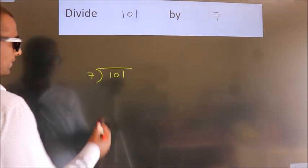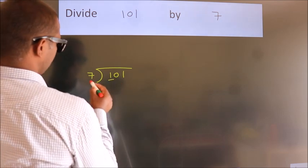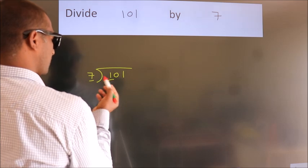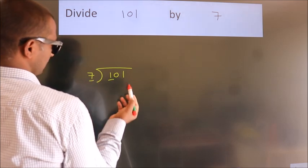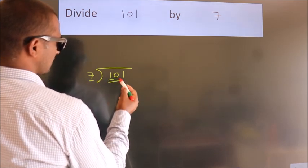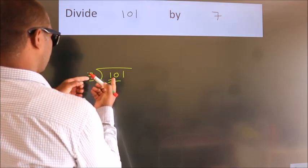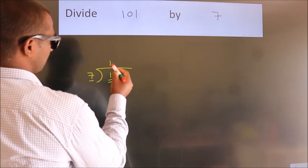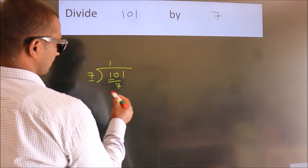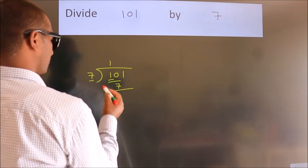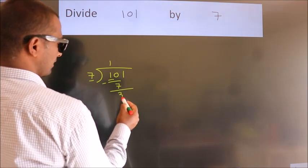Next, here we have 1, here 7. 1 is smaller than 7, so we should take 2 numbers: 10. A number close to 10 in the 7 table is 7 ones, which is 7. Now we subtract and get 3.